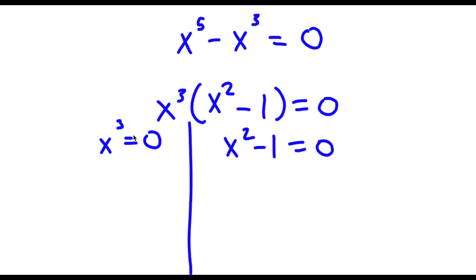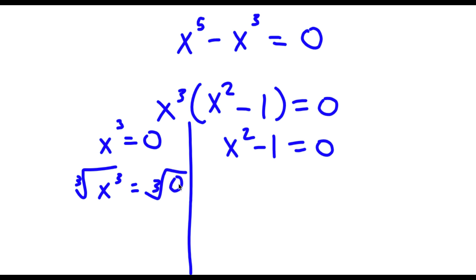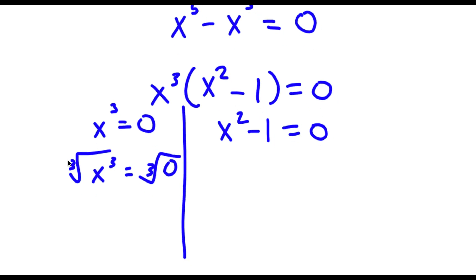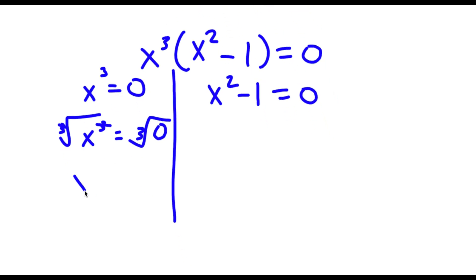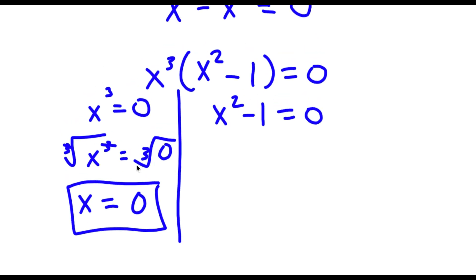For x to the power of 3 equals 0, I'm going to take the cube root on both sides. The cube root of x to the power of 3 is simply x, and the cube root of 0 is 0. So x equals 0 is one solution.